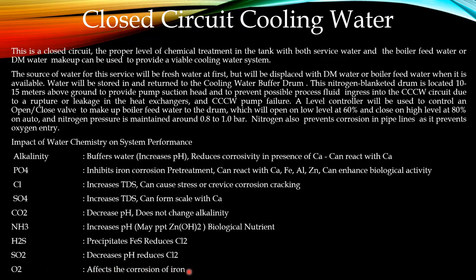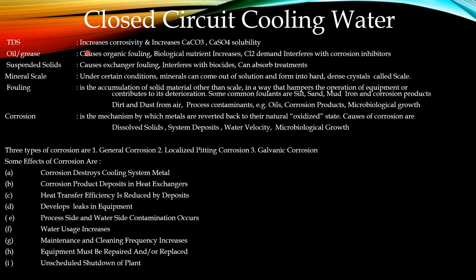Hydrogen sulfide will precipitate ferrous sulfide and reduces chloride. If sulfate is present, that will decrease the pH and reduce chlorides. Oxygen affects the corrosion of iron — oxygen will oxidize the metal surface, which increases corrosion in the pipeline. Total dissolved solids (TDS), if present, increases corrosivity and increases calcium carbonate and calcium sulfate solubility in the cooling water. Increases in TOC cause organic fouling, act as biological nutrients, increase chlorine demand, and interfere with corrosion inhibitors. Suspended solids cause exchanger fouling and interfere with biocides and can absorb treatment chemicals.